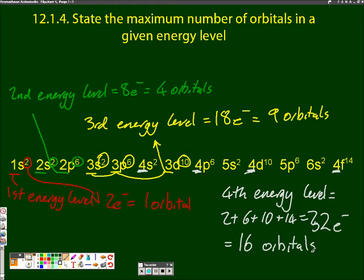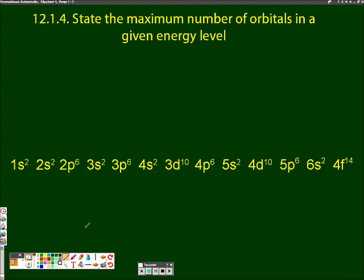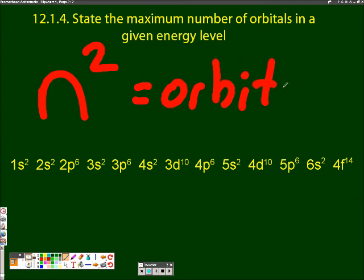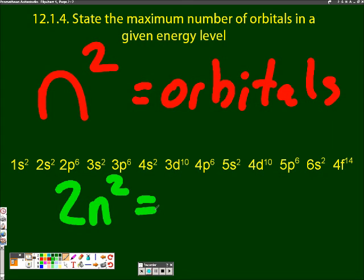So what's the quick way to remember this? Well, if you want to know the number of orbitals, it's n squared, where n is the energy level, the big number in this case. And if you want to know the number of electrons, that's 2n squared.